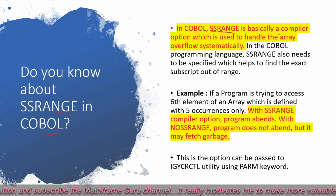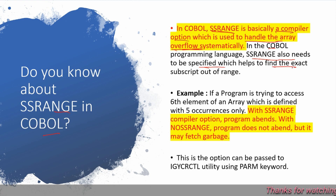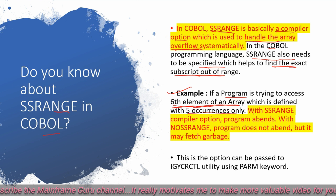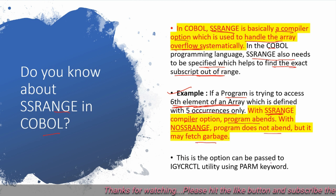Do you know about SSRANGE in COBOL? SSRANGE is a compiler option used to handle array overflow systematically in COBOL. It helps find the exact subscript out of range. For example, if a program tries to access the sixth element of an array defined with only five occurrences: with the SSRANGE compiler option, the program will abend; without SSRANGE (NO SSRANGE), the program won't abend but may fetch some garbage value. This option can be passed to the IGYCRCTL utility using the PARM keyword.